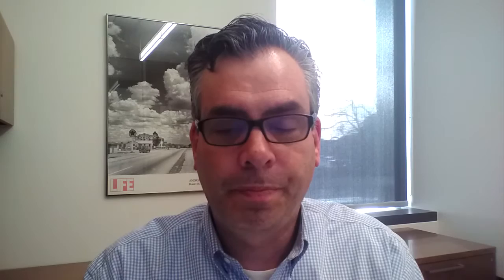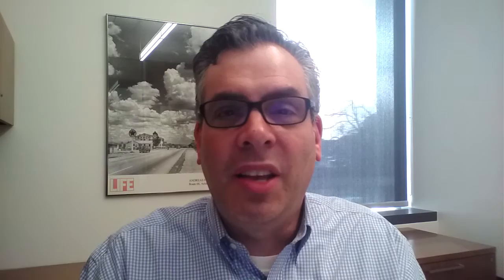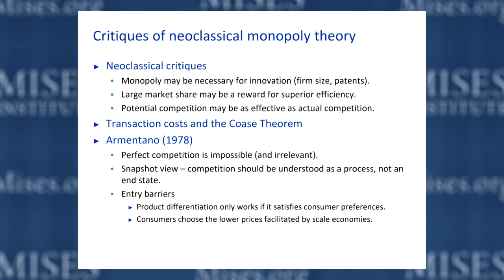The second point is very similar. If scale economies are present — meaning the incumbent firm can produce at a lower average cost than rivals because it's producing on a large scale — that simply reflects the fact that in the past, consumers have preferred to buy the incumbent firm's products. And if consumers don't like scale economies, they're free to purchase from newer, smaller firms that don't have the advantages of scale economies. The fact that a firm with scale economies can do very well in the market is simply another way of saying consumers prefer low prices to high prices, other things equal.